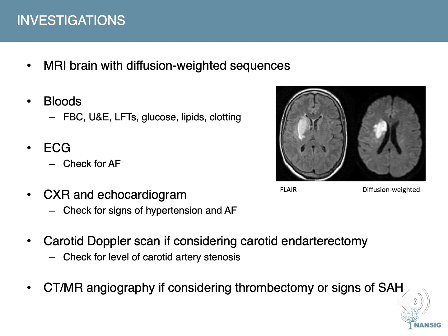An MRI scan of the brain with diffusion-weighted sequences is more sensitive than CT at detecting acute infarcts and may be taken on the same day as the initial CT head. Bloods are taken to help identify risk factors and rule out differentials, and include an FBC, U&Es, LFTs, glucose, lipids and clotting. An ECG trace is taken to check for atrial fibrillation. A chest x-ray and echocardiogram are used to check for signs of hypertension or atrial fibrillation. An urgent carotid Doppler scan is taken to check for the level of carotid artery stenosis in patients considered for carotid endarterectomy.